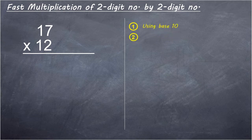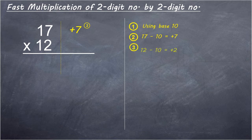Step 2: 17 minus 10 equals plus 7. Step 3: 12 minus 10 equals plus 2.